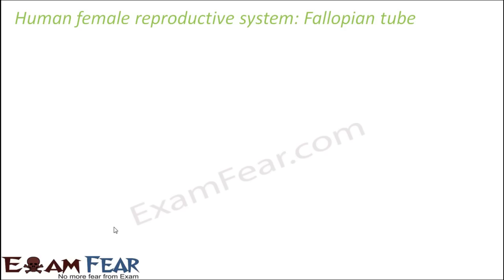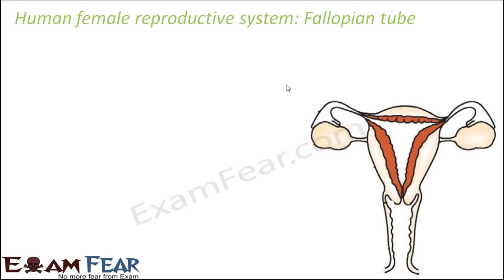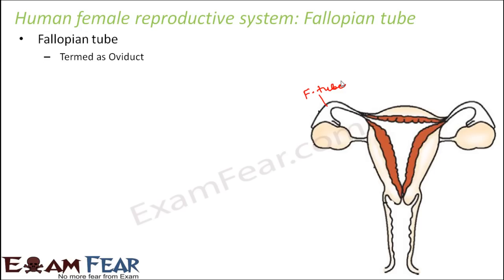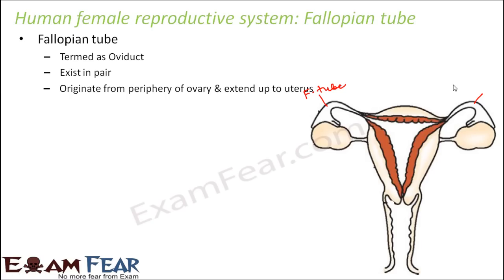Let us talk about the next part, the fallopian tube or oviduct. It is also known as oviduct, related to ovary and ovum. It exists in pairs — one fallopian tube on each side. It originates from the periphery of the ovary and extends up to the uterus, basically connecting the ovary and the uterus. The question is: why does it connect them and what is its purpose?